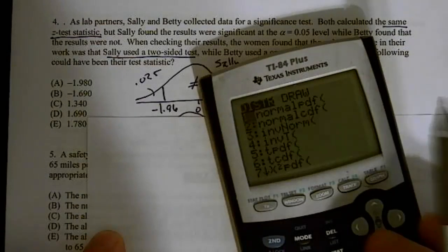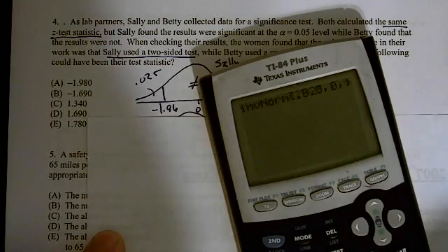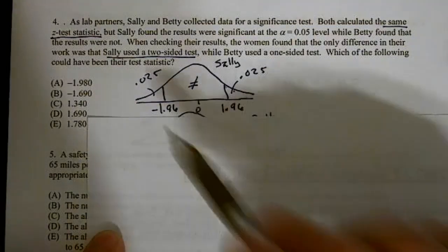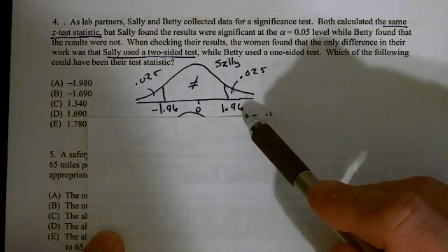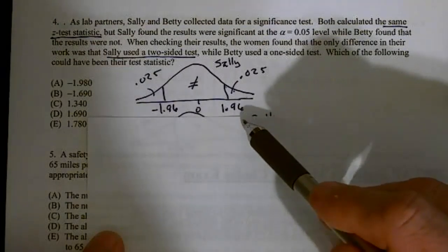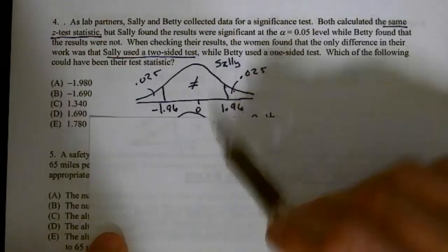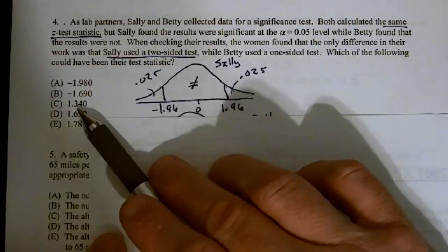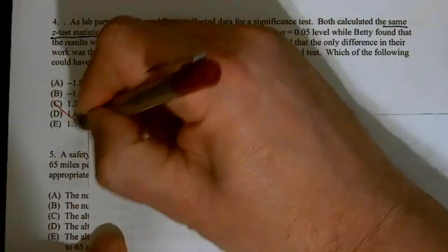So let's find out what her z-score must have been. So second vars, inverse norm, 0.025, mean 0, standard deviation of 1. We end up getting z-score of negative 1.96. So she could have either had a negative 1.96 or 1.96, because we don't know if it was positive or negative. On the upper end, I need values greater than 1.96. And I look, and on the upper end, 1.34 is not high enough. That's not high enough. That's not high enough. So that gets rid of every single one of those answers because none of those values were rejected.